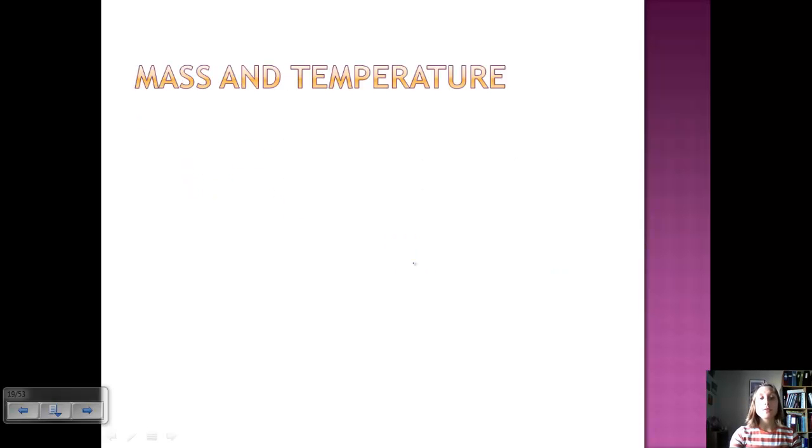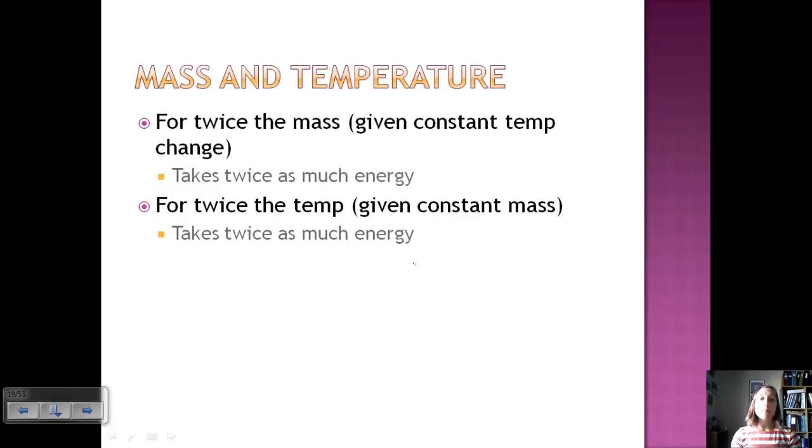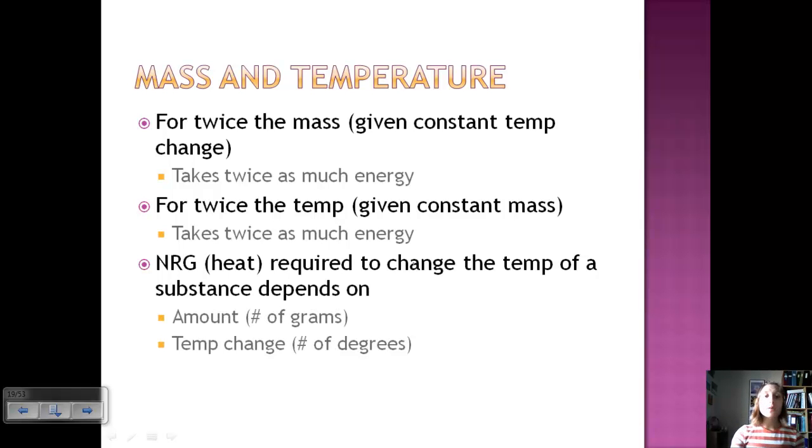Let's look at how this relates to mass and temperature. If you have something that you are trying to add energy to, if you double the mass and you want to maintain the same temperature change, it's going to take twice as much energy to do that. Same is true if you have a constant mass, but you want to double the temperature. It's going to take twice as much energy. So the energy or heat required to change the temperature of a substance depends on two things: the amount (usually number of grams, but could also be moles) and the temperature change or the number of degrees that you want to raise or lower your temperature.